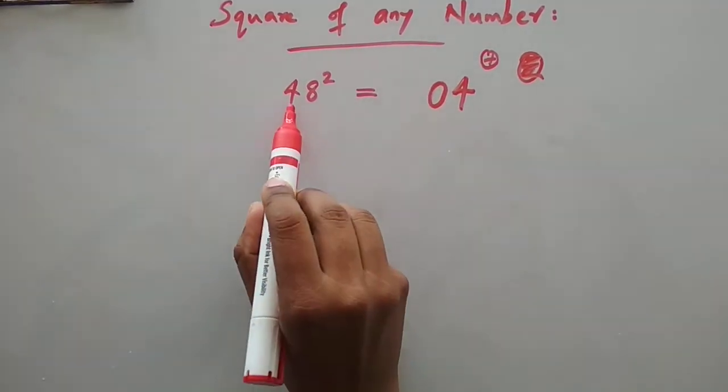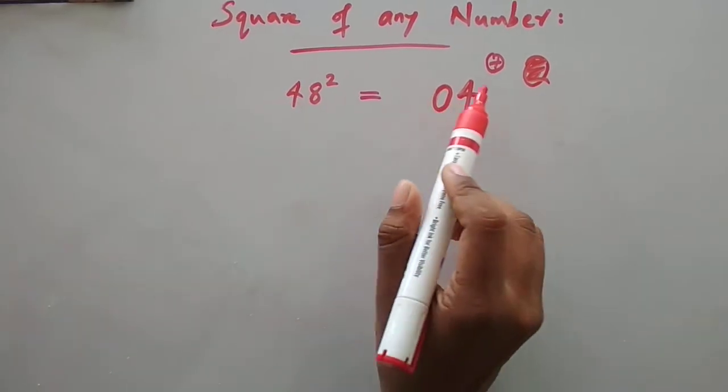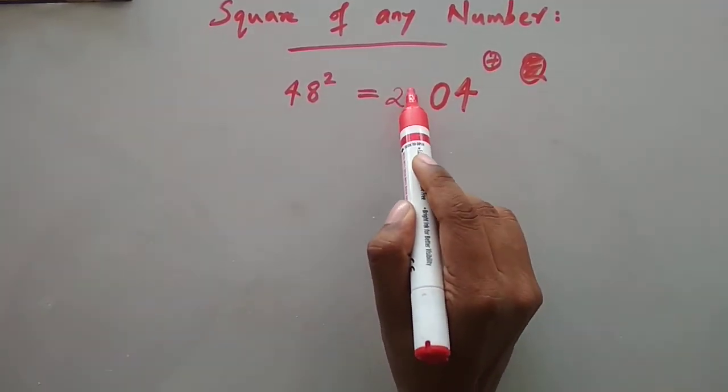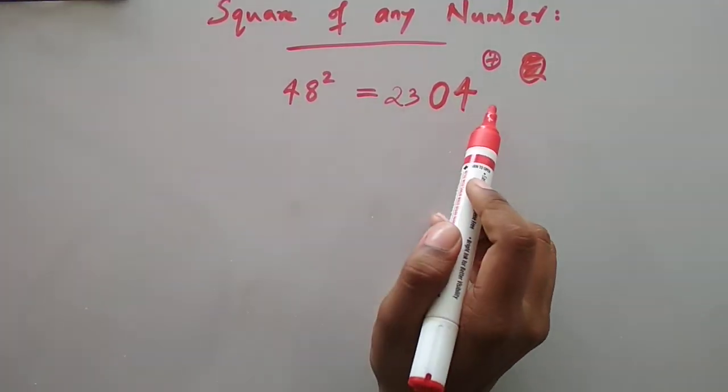And then what we will find is we will find the square of 4. 4 square is 16. We should add 7 to 16. 16 plus 7 is 23. So the answer is 2304. 48 square is 2304.